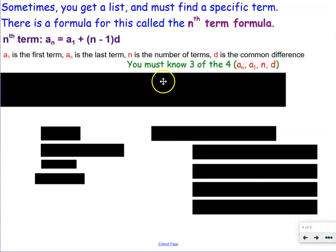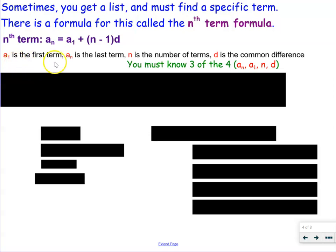Sometimes you get a list and must find a specific term. There's a formula for that called the nth term formula: aₙ equals a₁ plus (n minus 1) times d. a₁ is the first term, aₙ is the last term, n is the number of terms, and d is the common difference. You must know three of the four to use this formula.